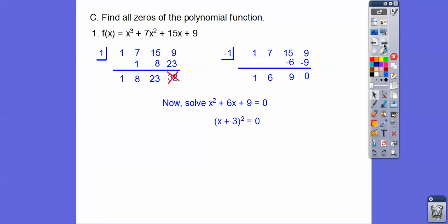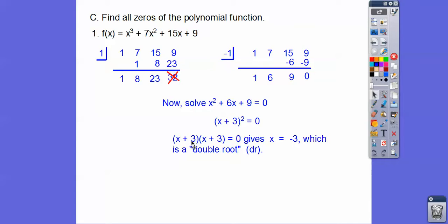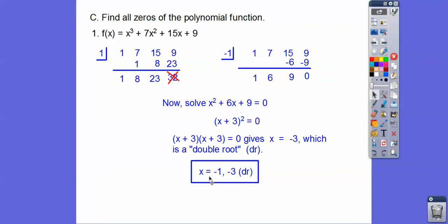This is a perfect square trinomial. Factors of 9 that add to 6 are 3 and 3, so it factors to x plus 3 squared. We get a root of negative 3, and it's called a double root because it appears two times — x plus 3 squared is x plus 3 times x plus 3. Setting each equal to zero gives negative 3 both times. We abbreviate this as DR. So the solutions are negative 1, and negative 3 as a double root. That's three solutions total for this cubic equation.